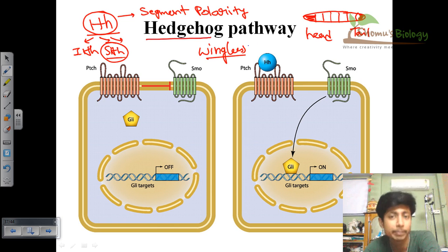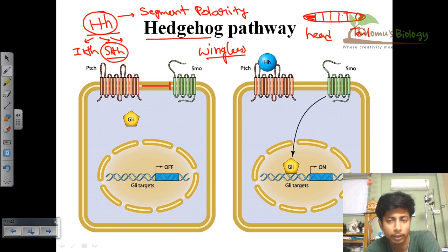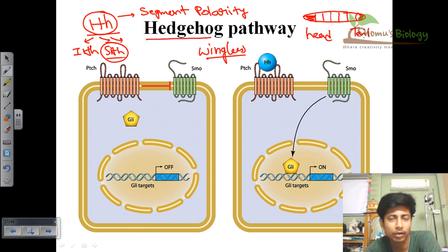Wingless is another signaling system and also a segment polarity gene cascade. These two work together and provide the sequential development of the Drosophila larva and its different body segments. This is also true for other arthropods with body segmentation — it controls which segments have legs, since in arthropods legs always come from the upper part of the body, not the lower, due to this segment polarity signaling.